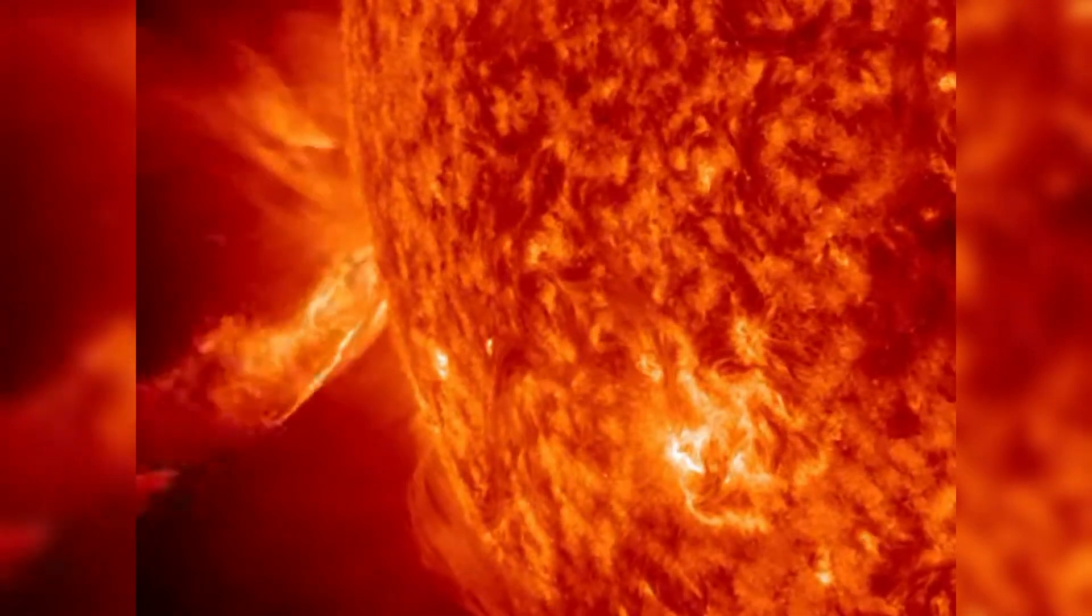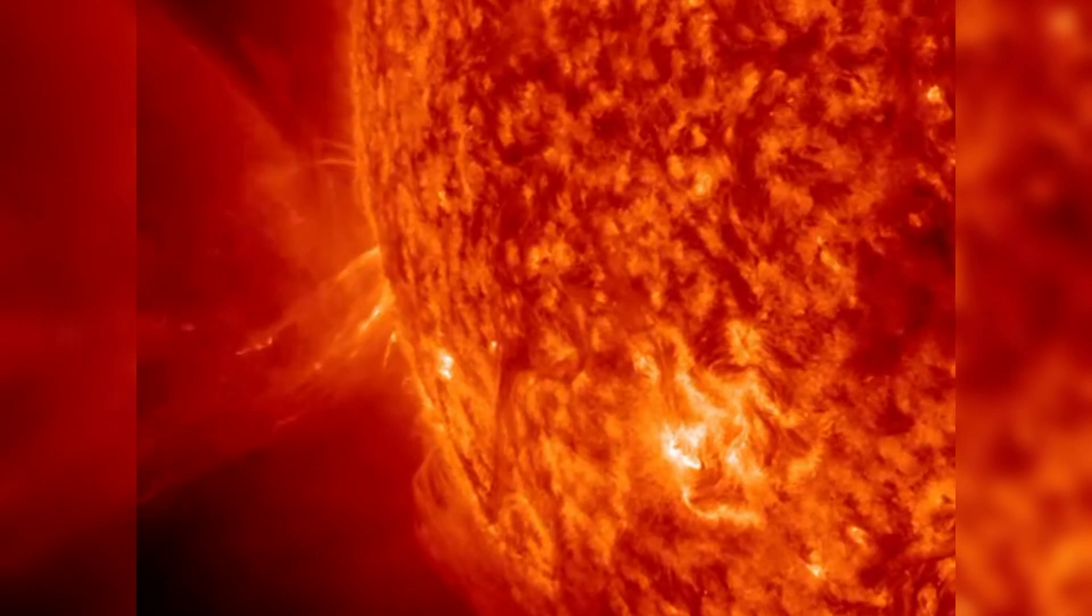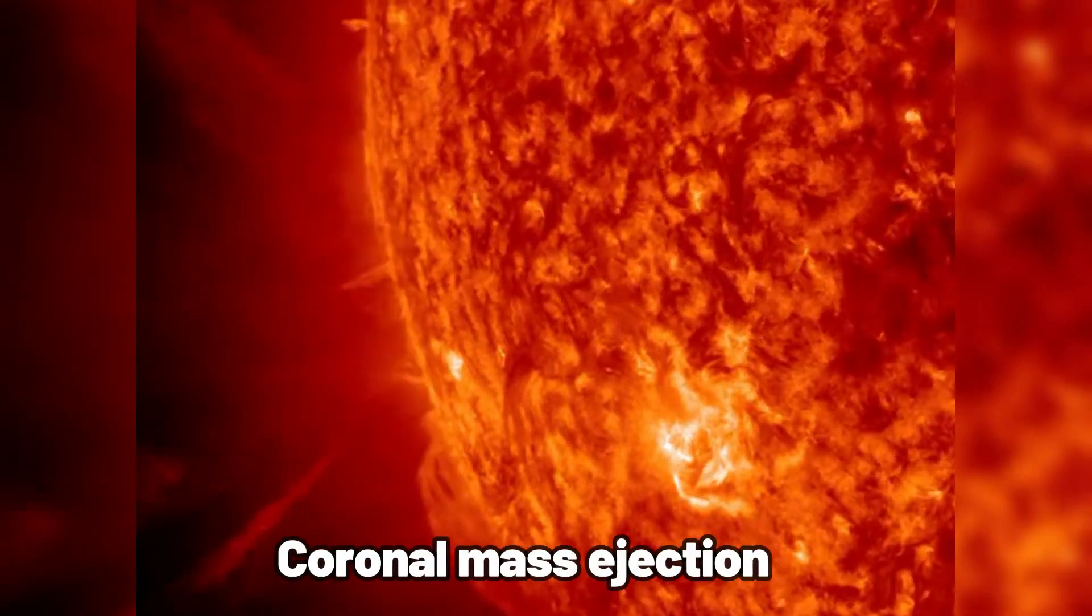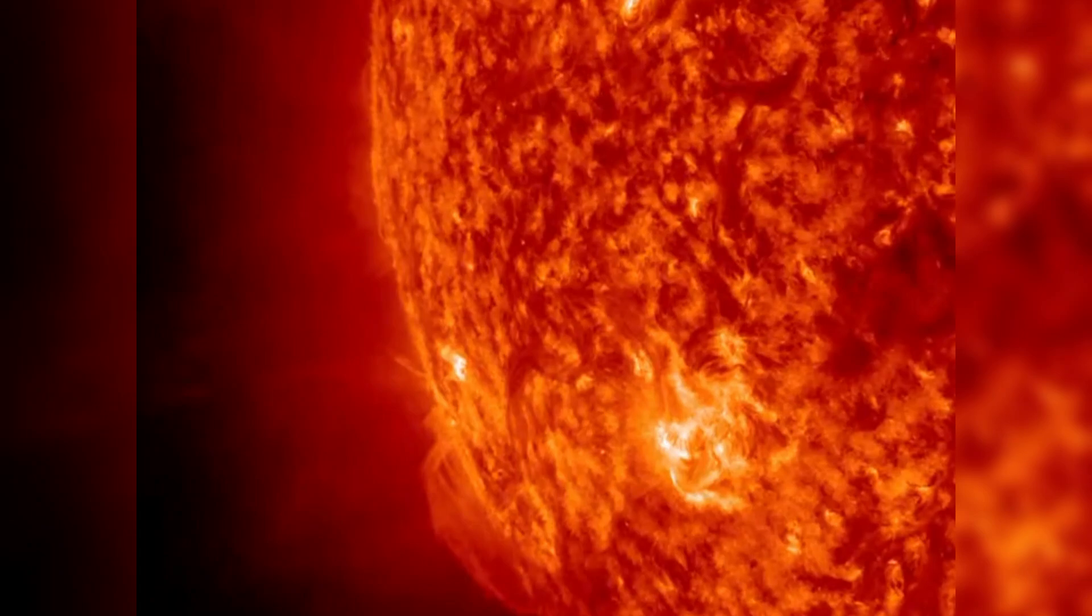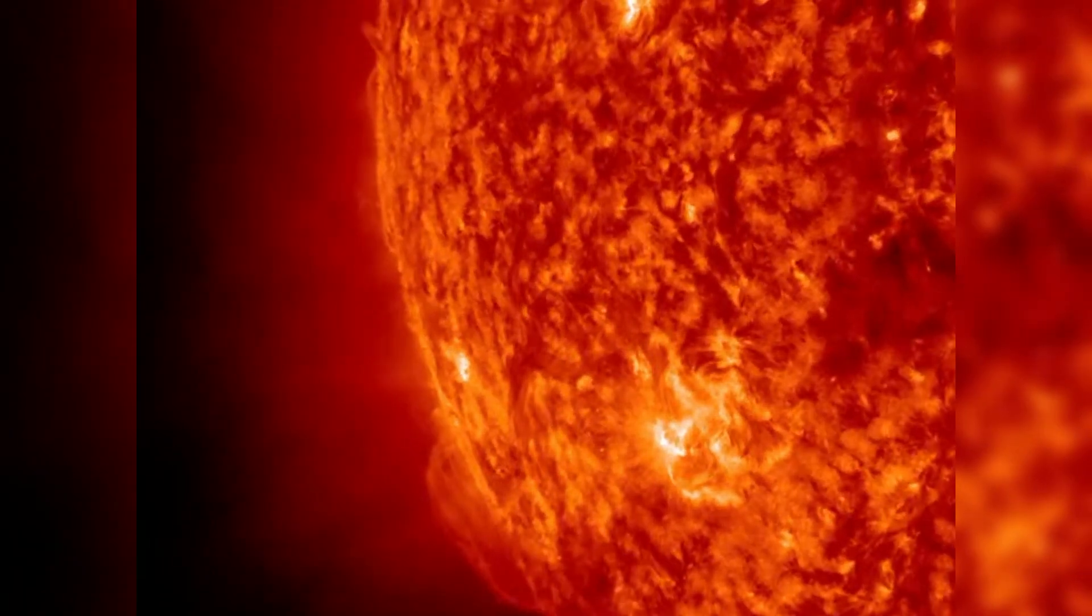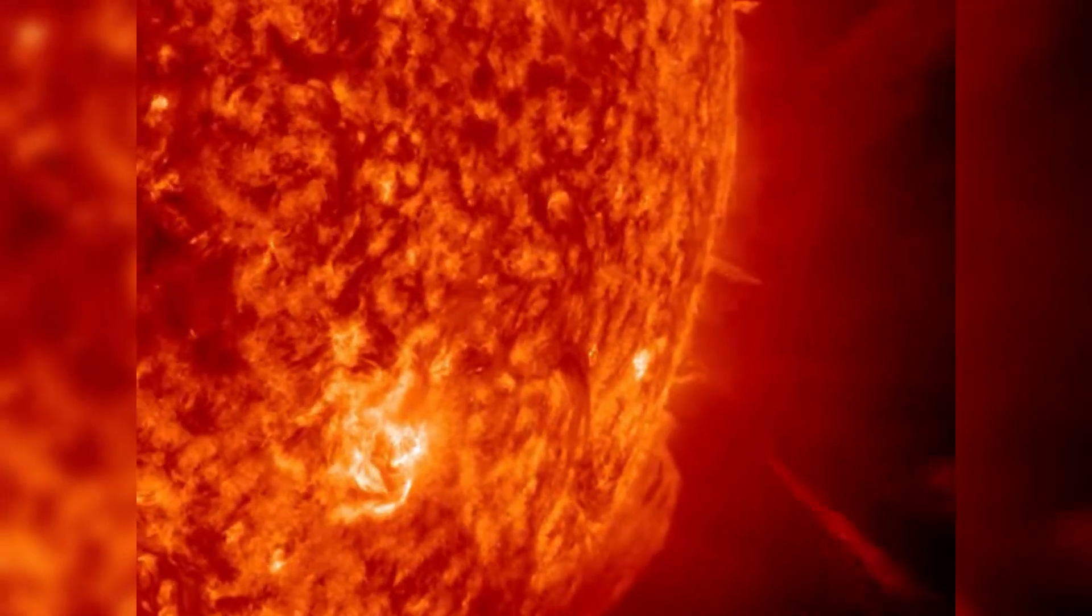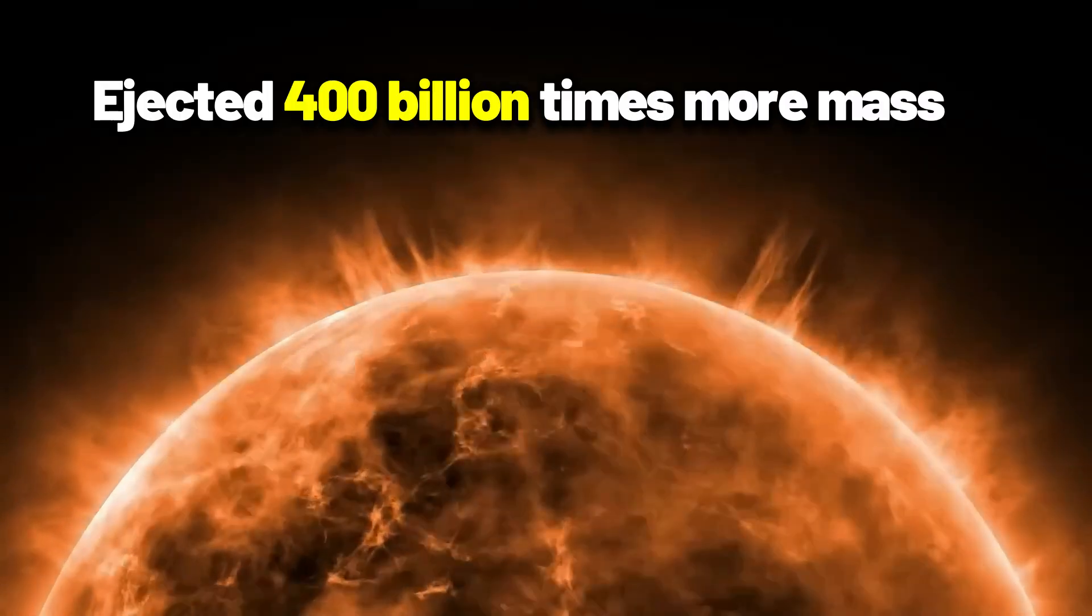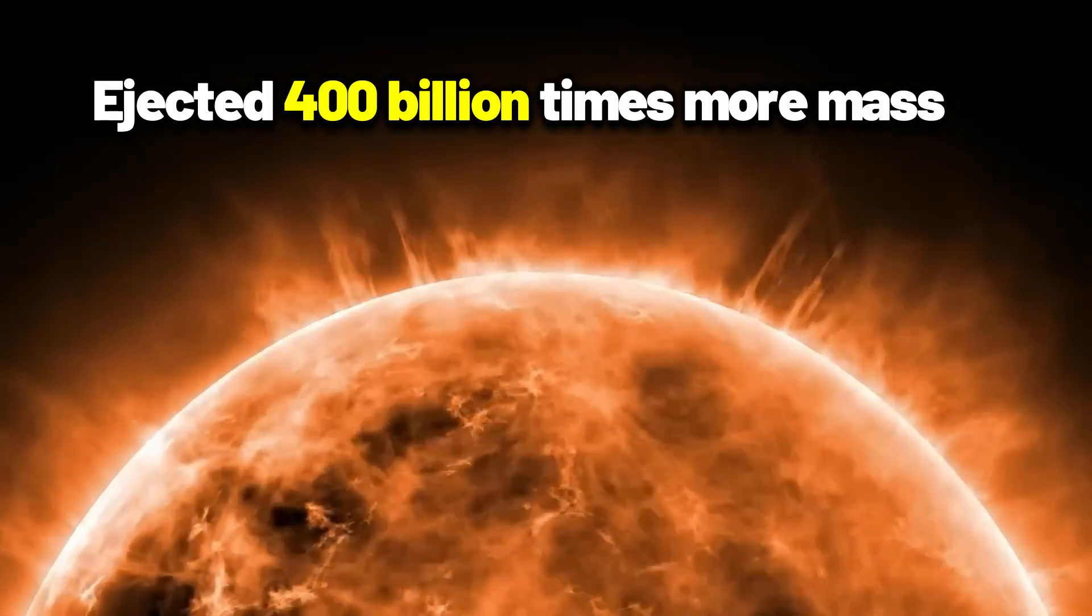The Sun's fragile outer atmosphere, the corona, is periodically ripped away in a process known as a coronal mass ejection, which happens very often on our star. On the other hand, compared to the typical CME, Betelgeuse's SME ejected 400 billion times more mass.